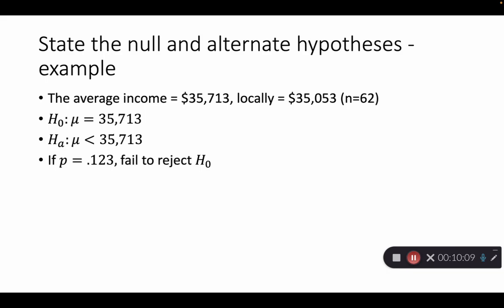I hope that makes a little bit of sense. So here, let's just say that p is equal to 0.123. We fail to reject the null, right? We fail to reject the null, which means that we assumed that 35,713 was the case, and we're continuing to assume that that is the case. We're not rejecting it.